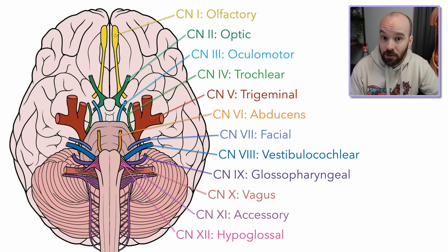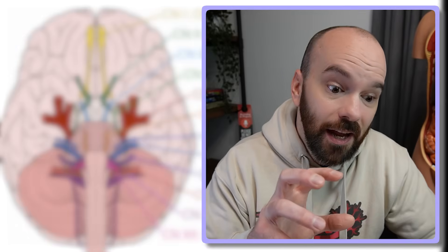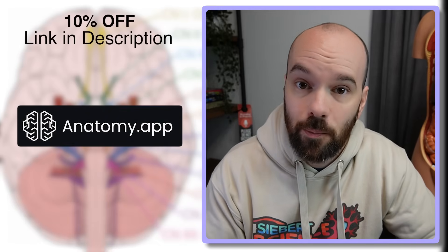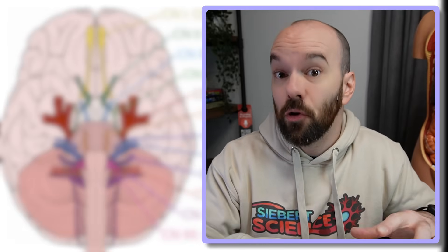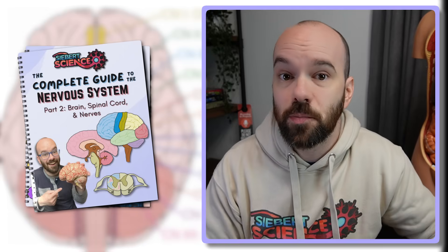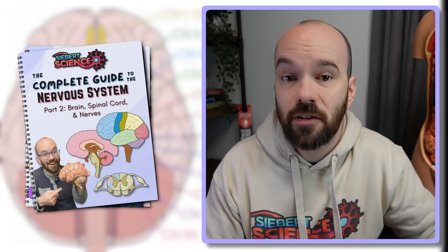Those are the 12 cranial nerves. Just by watching the video doesn't mean you have them memorized — you've got to practice them. In a moment, I'll give you a couple of blank diagrams that you can use to practice. And if you need to learn this for a gross anatomy class or med school, or want to know what each nerve connects to in the brain, check out Anatomy.app — there's a link in the description along with a coupon code for 10% off. If you're learning all of the nervous system, check out my two-part nervous system study guide as well.